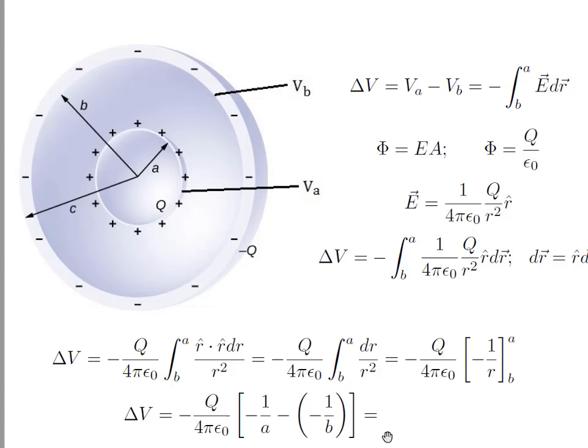VA minus VB equals Q divided by 4 pi epsilon 0 times 1 over a minus 1 over b.